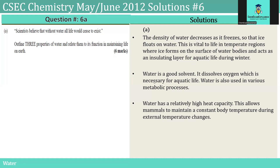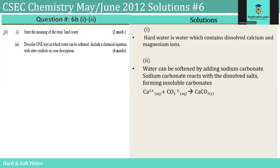Two, water is a good solvent. It dissolves oxygen, which is necessary for aquatic life. Water is also used in various metabolic processes. Three, water has a relatively high heat capacity. This allows mammals to maintain a constant body temperature during external temperature changes.